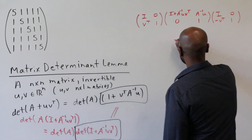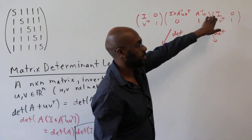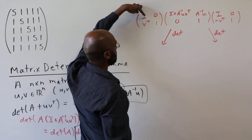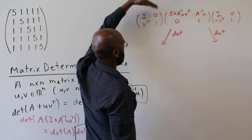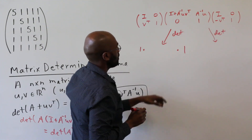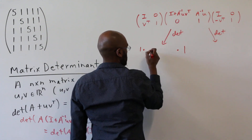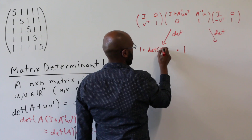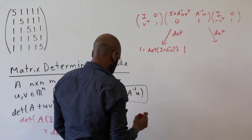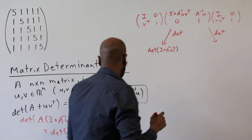We'll compute the determinant of this block product in two ways. The first way: take the determinant of each factor. The outer two matrices each have determinant 1, since they are triangular with ones on the diagonal. For the middle matrix, we have a block triangular form with a 1 in the corner, so its determinant is the determinant of the upper-left block, which is the determinant of A + A⁻¹·u·v^T — giving us exactly det(I + A⁻¹·u·v^T).